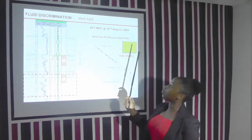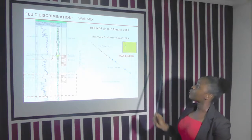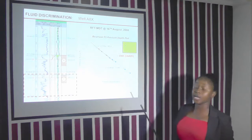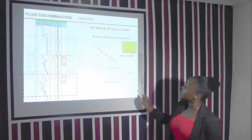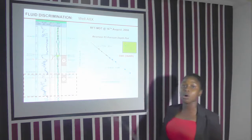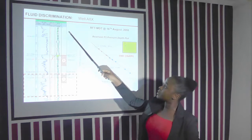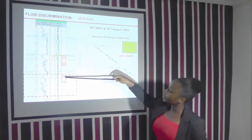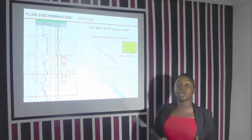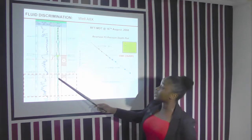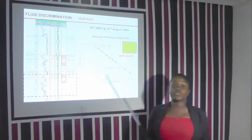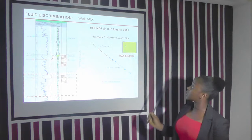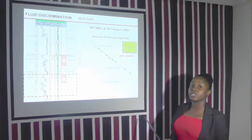For the fluid discrimination of well A8X on reservoir P1, we plotted pressure against depth and obtained the oil-water contact. On our log, we also located it at the same depth, confirming the result. We observed a crossover in our neutron and density logs, which pointed to the fact that the oil-water contact was at that particular depth. We obtained the oil-water contact at 3,649 feet.